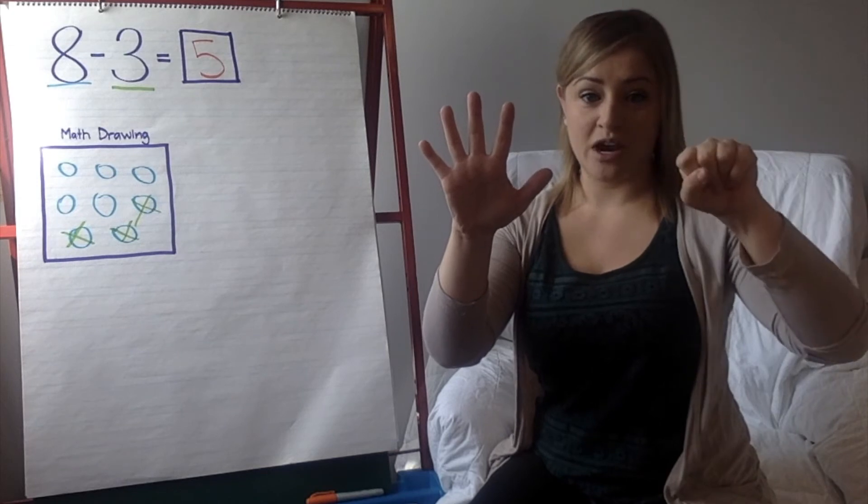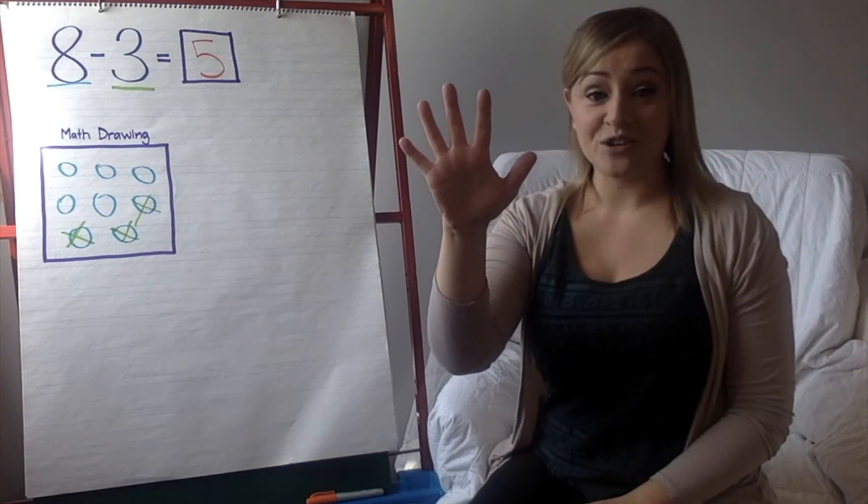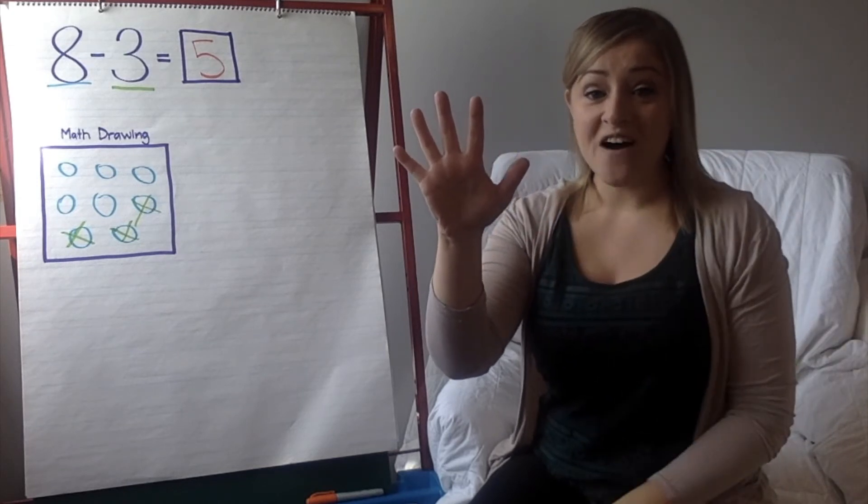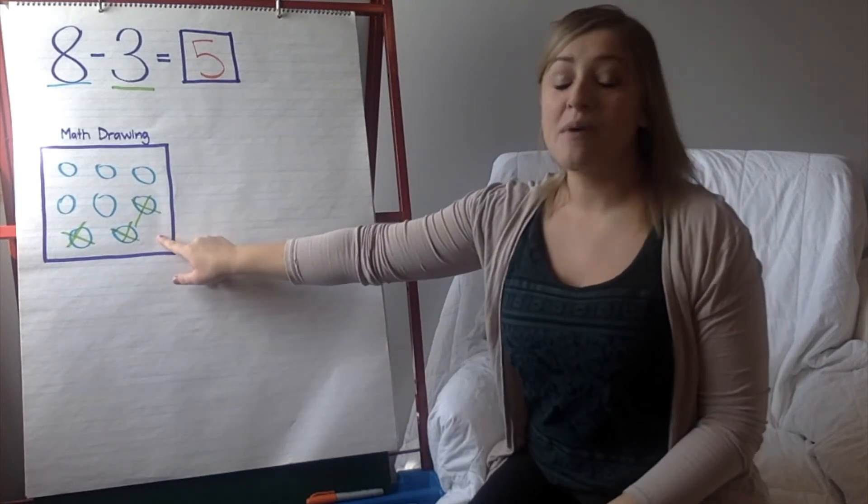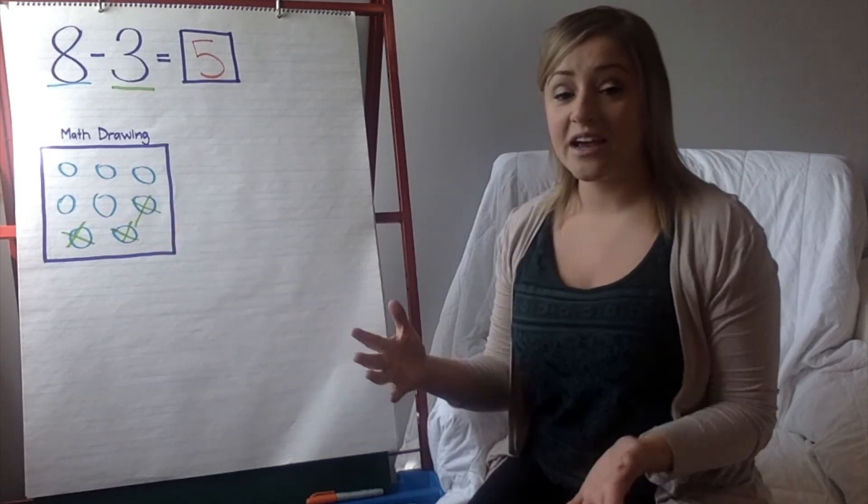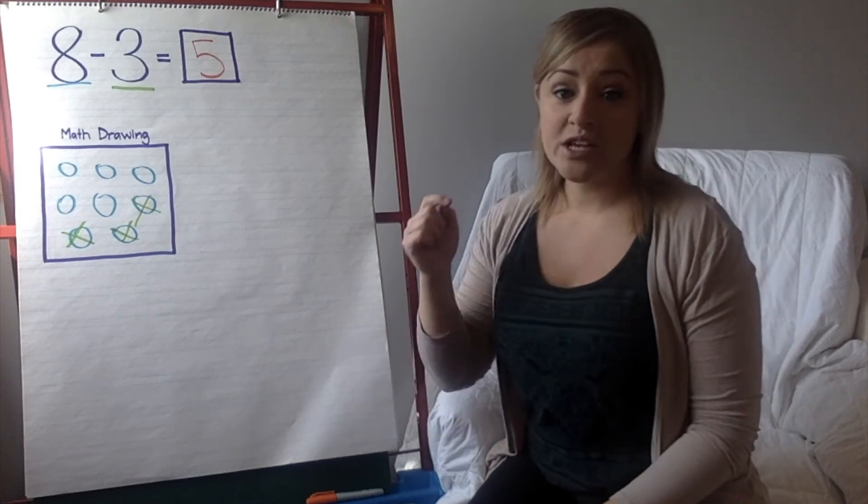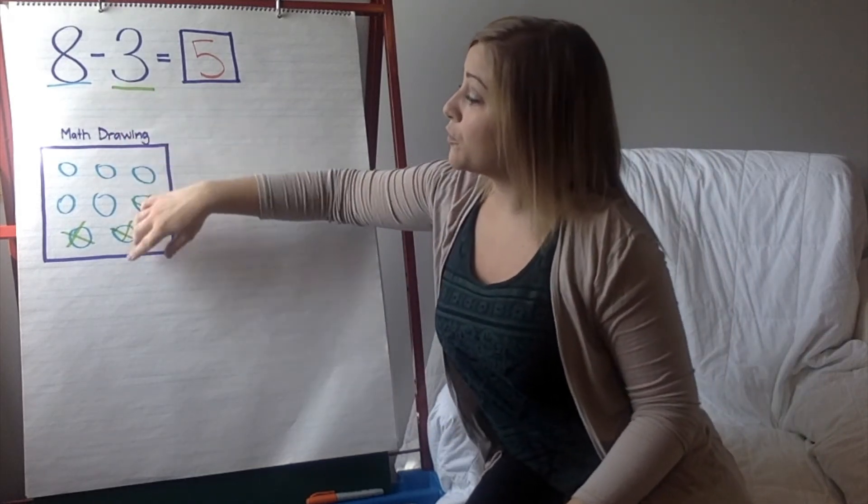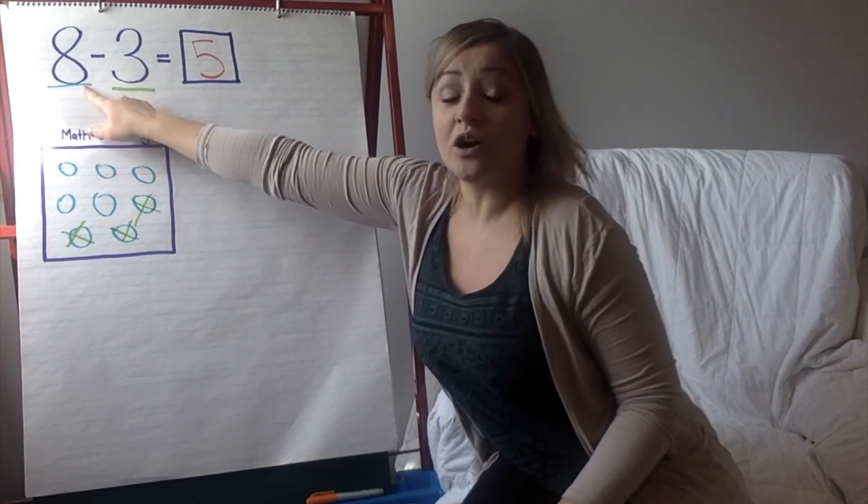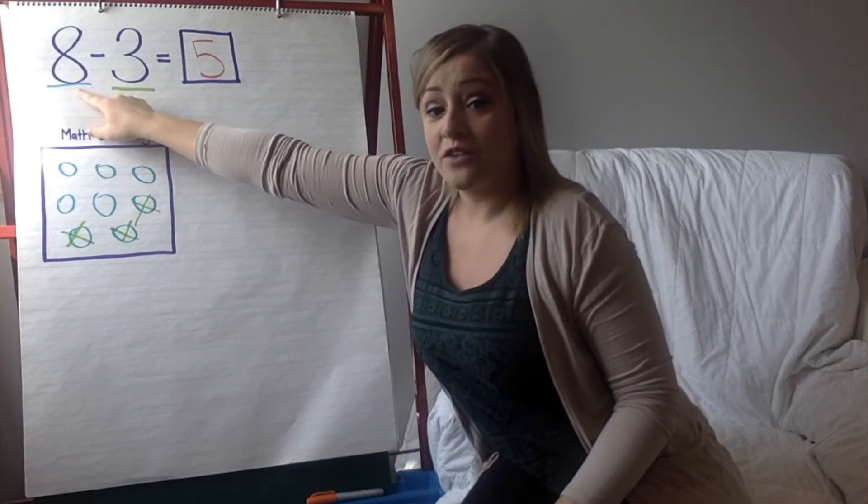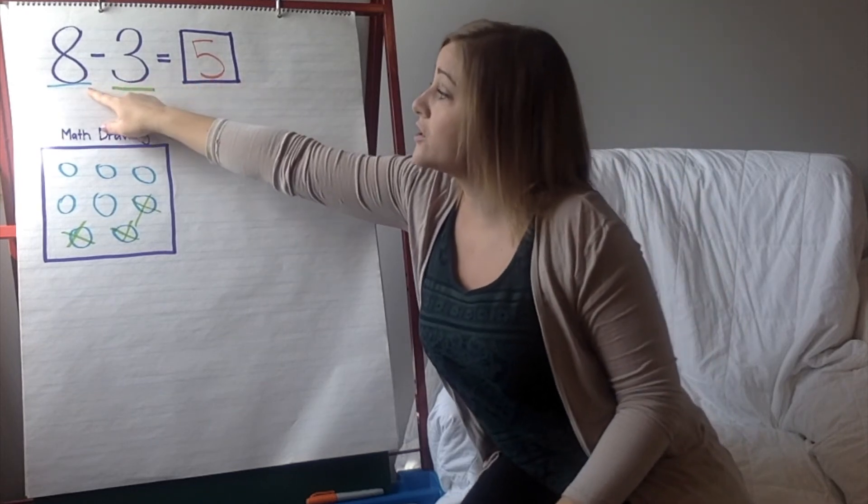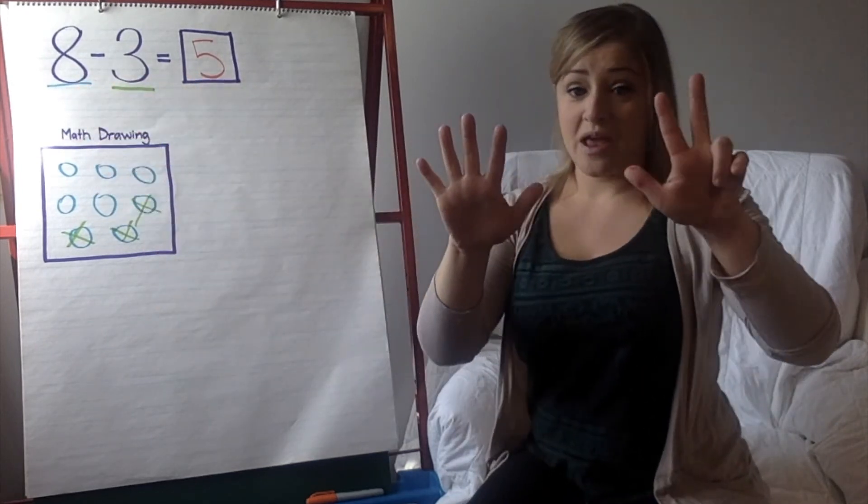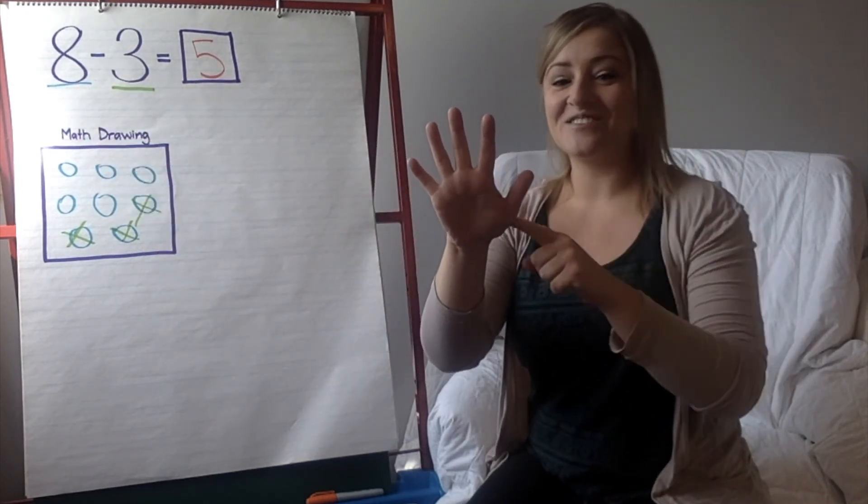1, 2, 3. How many fingers are you left? We have 5. So, you get the same answer even when you're drawing the math drawings and using circles and using your hands. We just have to remember, when we're doing subtraction, we always start with the big number first. The first number in our sentence, our number sentence in our equation, 8, 8 take away 3, gives us 5.